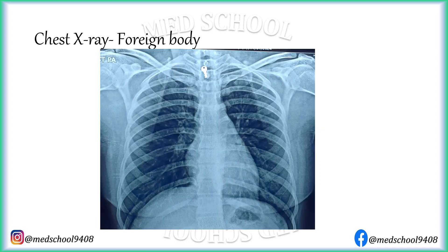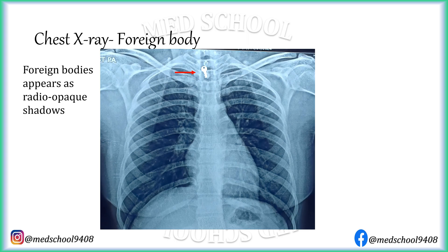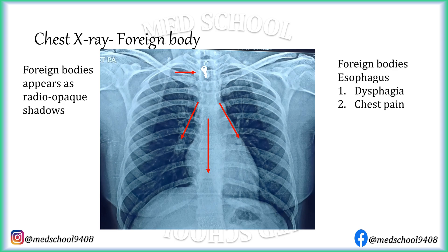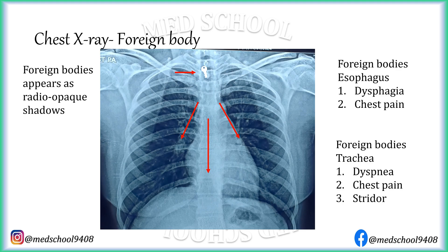Foreign body in trachea presents as a radiopaque shadow. But on PA view or AP view, it is difficult to judge whether it is present in trachea or esophagus. This can be confirmed with lateral view chest x-ray. If the foreign body is present in midline below the carina, it is more likely to be in the esophagus, whereas foreign body present in a position lateral to midline is more likely to be in the airways. Foreign body in esophagus presents as dysphagia and chest pain, while foreign body in trachea presents as dyspnea, chest pain and stridor.